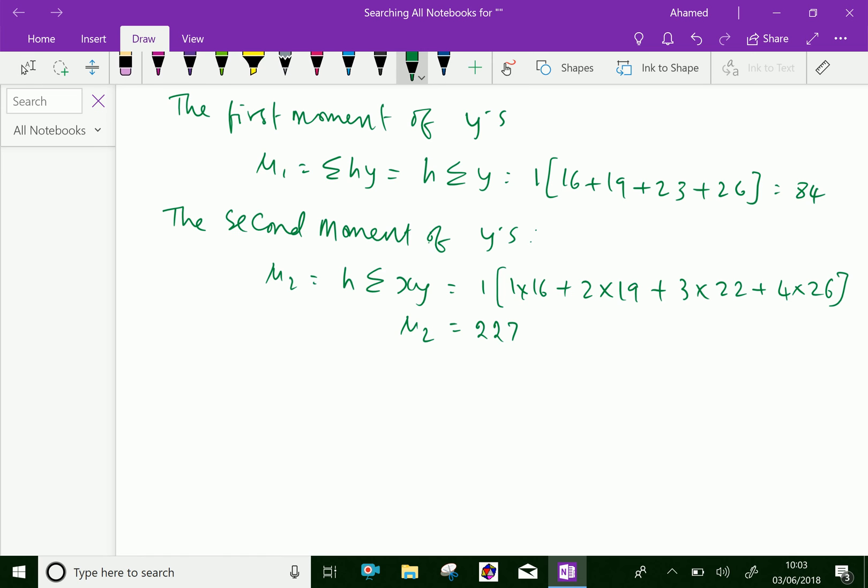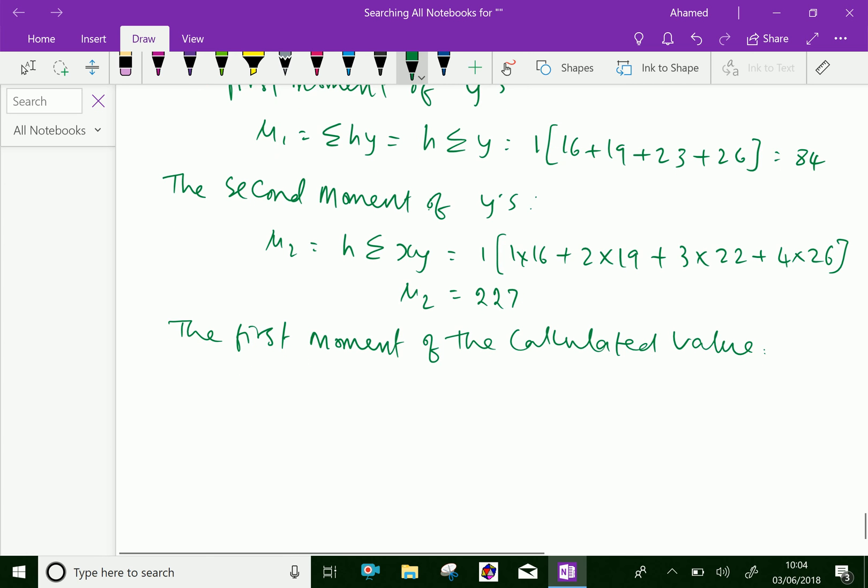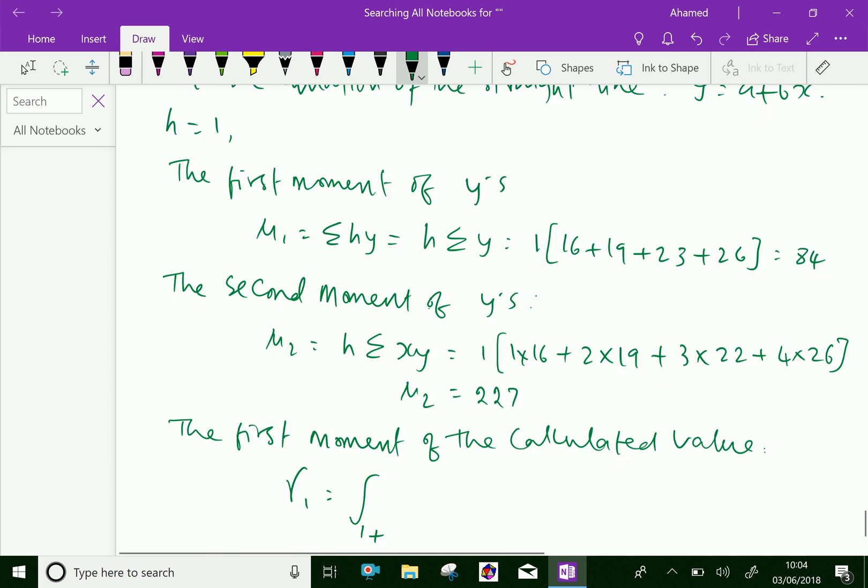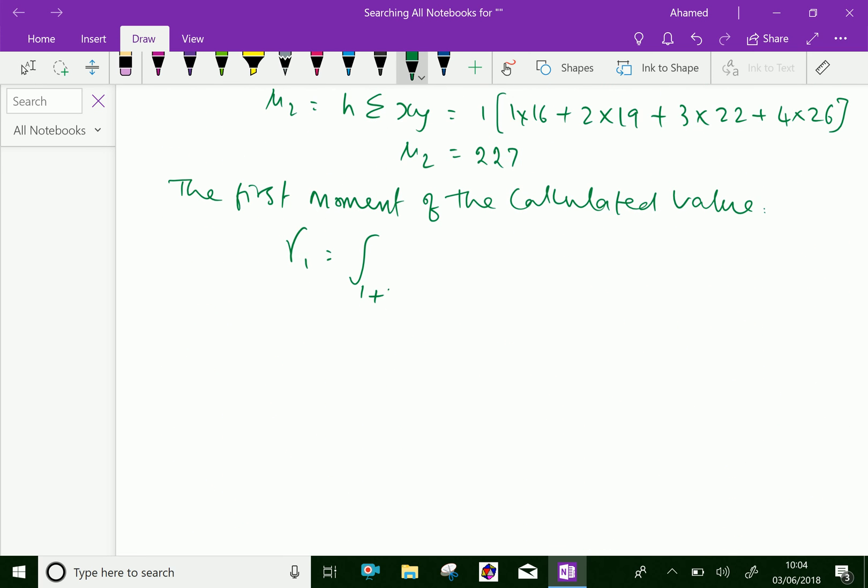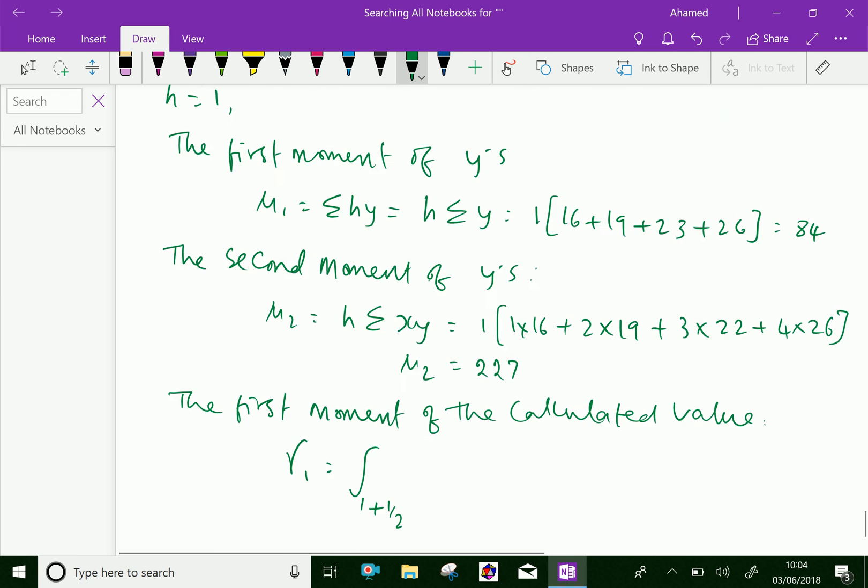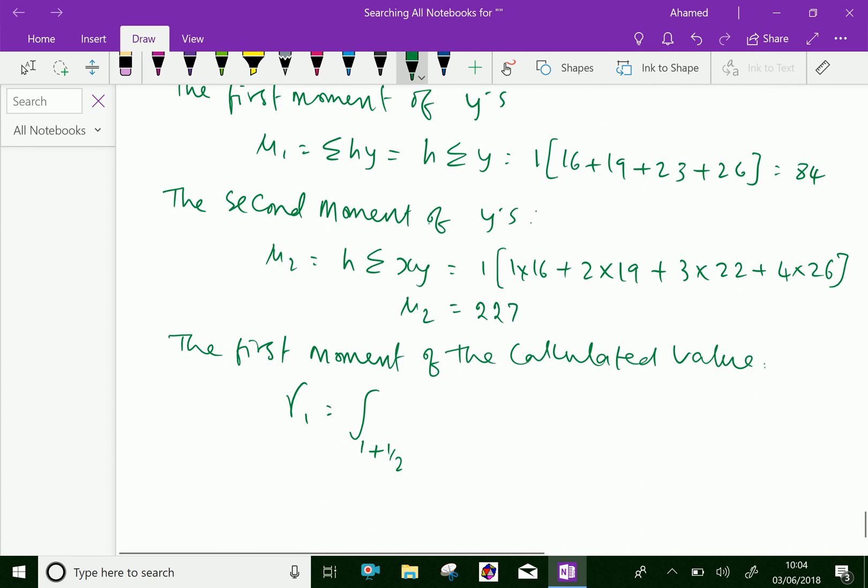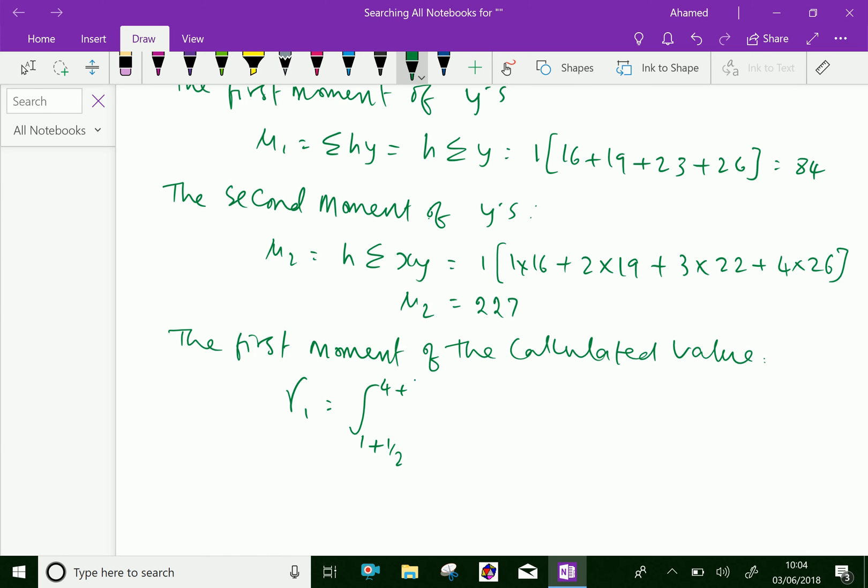Now we can equate the first moment of the calculated value by using formula. Suppose gamma 1 equal, here the first value of x is 1, that is 1 minus half is 0.5. Here the last value of x is 4 plus h is 4 plus 1 by 2.